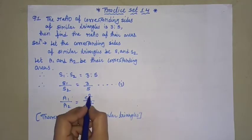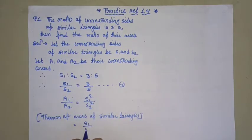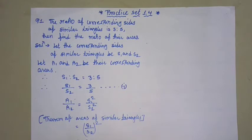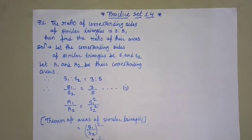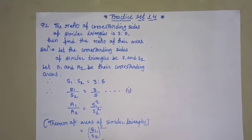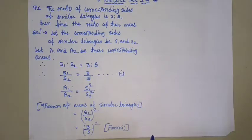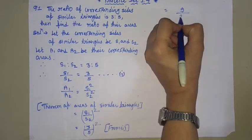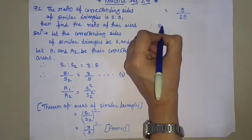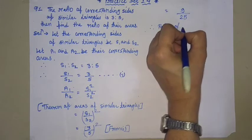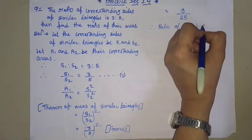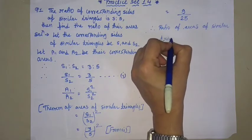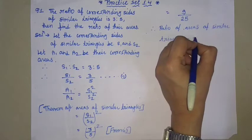Therefore, s1 divided by s2 equals 3 divided by 5, noted as equation 1. And a1 divided by a2 equals s1 squared divided by s2 squared, by the theorem of areas of similar triangles. This equals (3/5) squared = 9/25. Therefore, ratio of areas of similar triangles equals 9 is to 25.